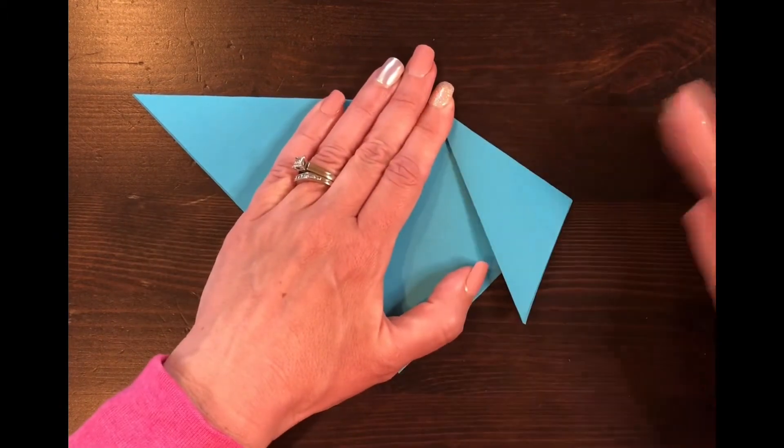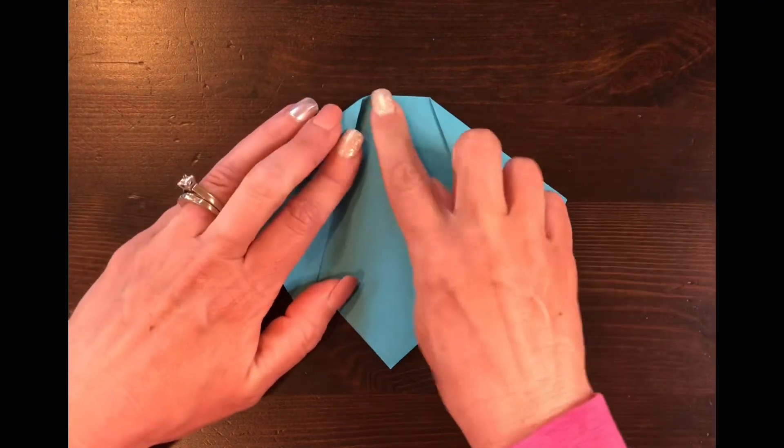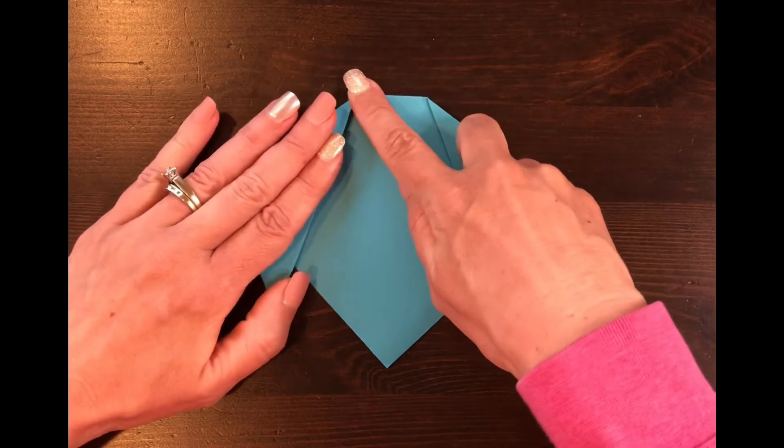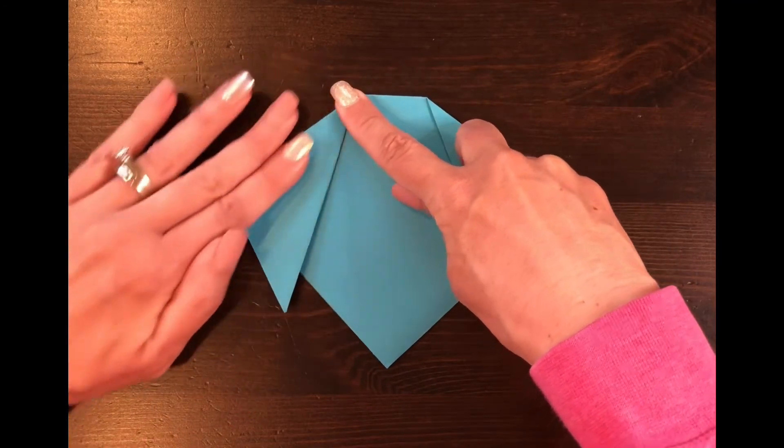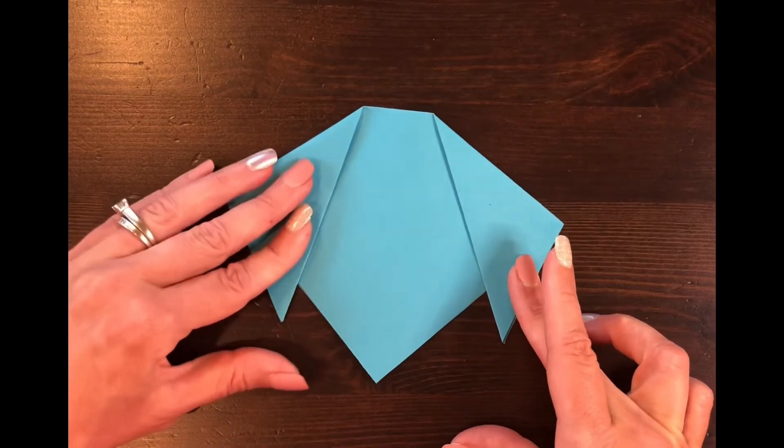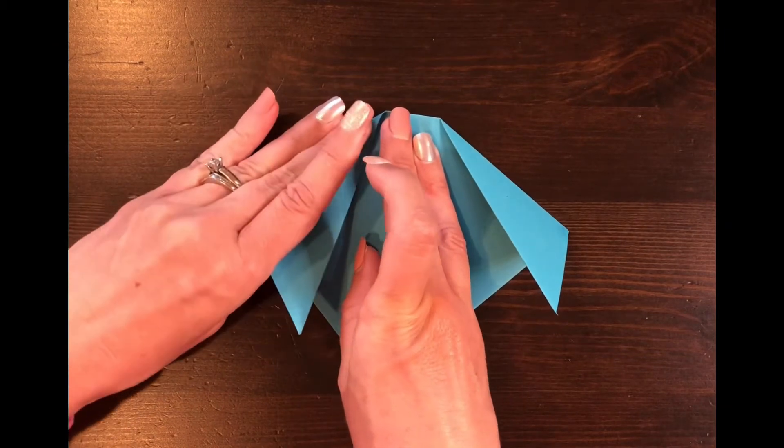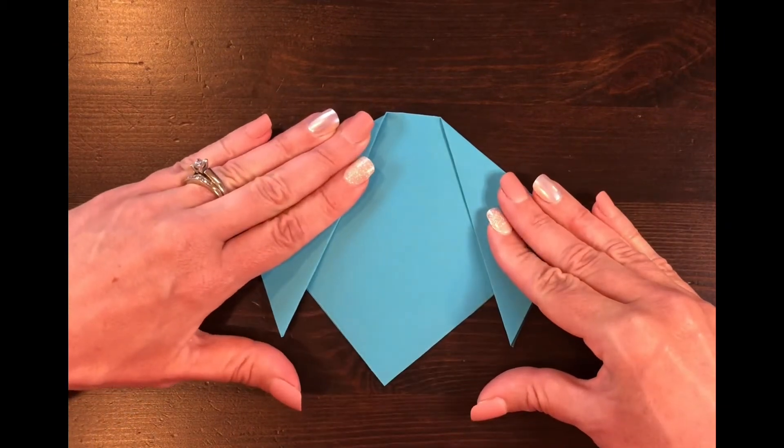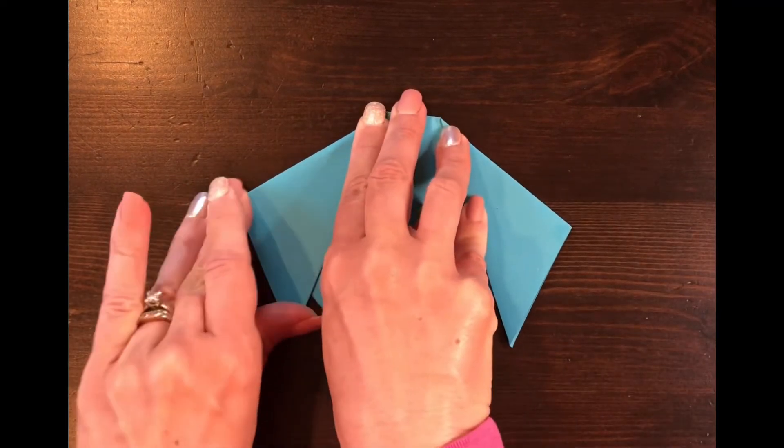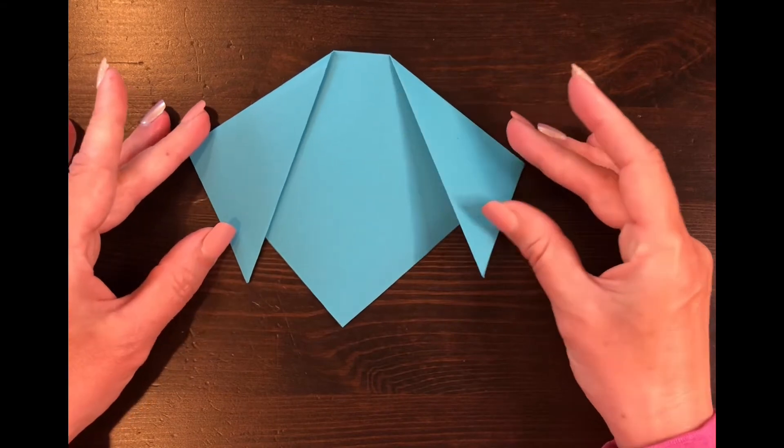Now I'm trying to make a match on the other side so the top of his head is going to be a straight line there and then he's going to have his ear on the other side. Trying to get those ears the same size. Press, press, press. So now your paper should look like this.